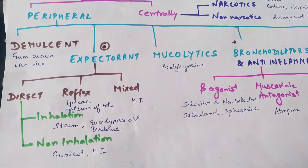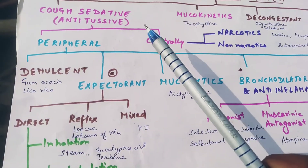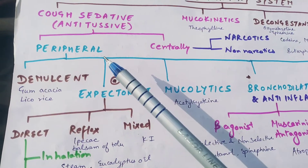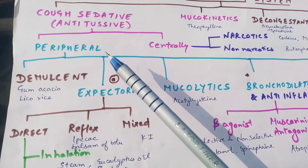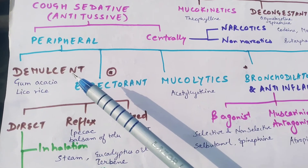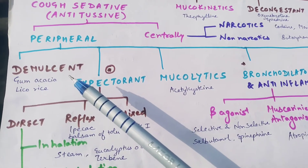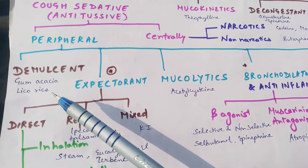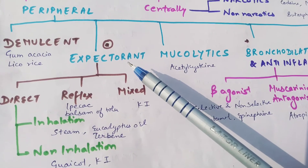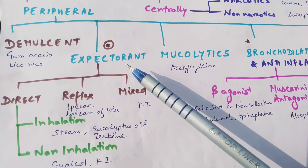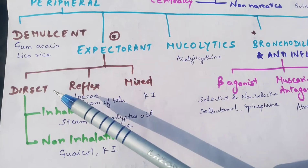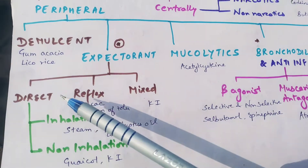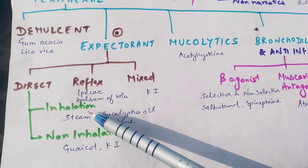Antitussive drugs act peripherally as well as centrally. Peripherally means local action, divided into demulcents which coat, protect, and soothe the mucous membrane, like gum acacia and liquorice; and expectorants which increase the volume and fluidity of mucus, divided into direct, reflex action, and mixed.